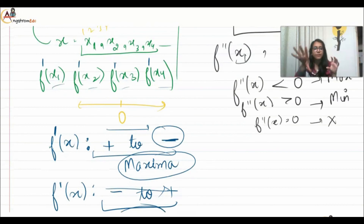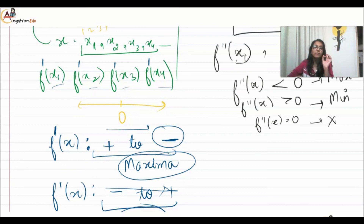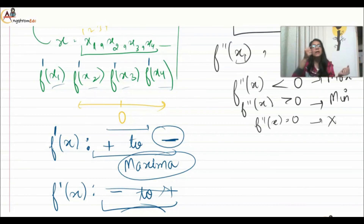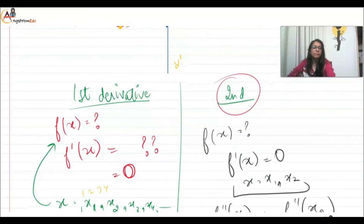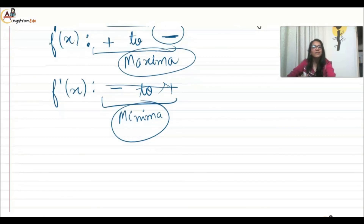I hope the maxima and minima concept is clear. This is a very easy topic, but it requires focus on the detail. Tending or approaching to negative means maxima; approaching to positive means minima. That was it for today's video. I hope you have no doubts left. For more content like this, stay connected with us. Thank you.